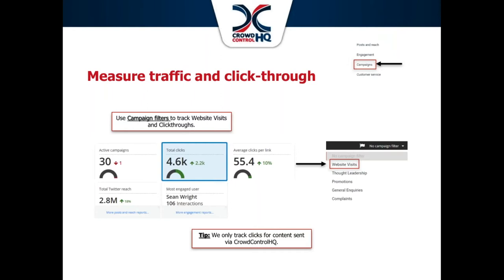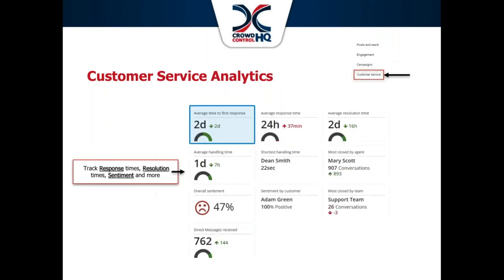When running this report, use the campaigns filter to review the impact that social media has had in educating your audience — about a new launch, road closures, or updated bin collections. It is worth mentioning that we are only tracking click-throughs for content posted through CrowdControl HQ, so we will not be able to track click-throughs for content posted directly on LinkedIn, Facebook, or Twitter. Use the total clicks report, filter by campaign, and link the results back to your objectives. The use of campaigns is critical in this report.